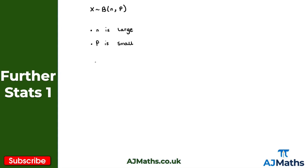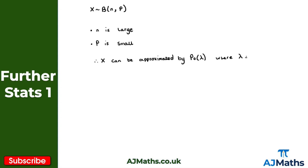So let's write that down. Therefore x can be approximated by a Poisson distribution with parameter lambda, where lambda is equal to n times p.